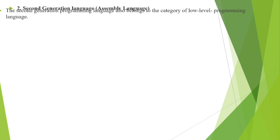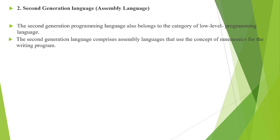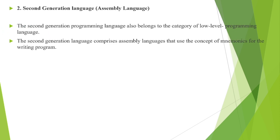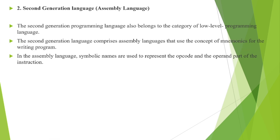The second generation is assembly language, which also belongs to the category of low-level language. It is not understood by the computer directly, but through an assembler it can be converted into machine language. Assembly language uses mnemonic codes — for example, 'ADD' is used instead of writing out 'addition'. Symbolic names are used to represent the opcode and operand parts of instructions.